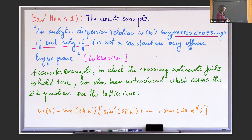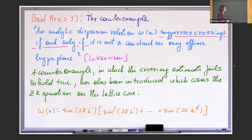In Lukkarinen's paper, he writes that an analytic dispersion relation omega_K suppresses crossings — meaning you have a good estimate — if and only if it is not constant on any affine hyperplane. The if-and-only-if statement also shows a counter-example, which is exactly the type of ZK equation we have here. So you have to work a lot harder. Not unexpectedly, the results — the limits you get — are going to be weaker than what they get. You have flat pieces for the Fourier transform.